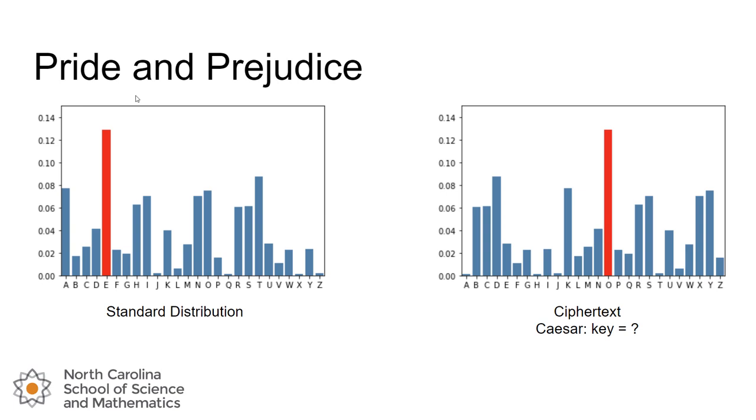Then the fact that we know the key, we can figure that out by counting how many spots O has shifted over since we think that's from E. If we think this high frequency spike at the letter O in the ciphertext maps back to E in the plaintext, we can count that those are 10 units apart. So that must mean the key used in the Caesar cipher was 10.